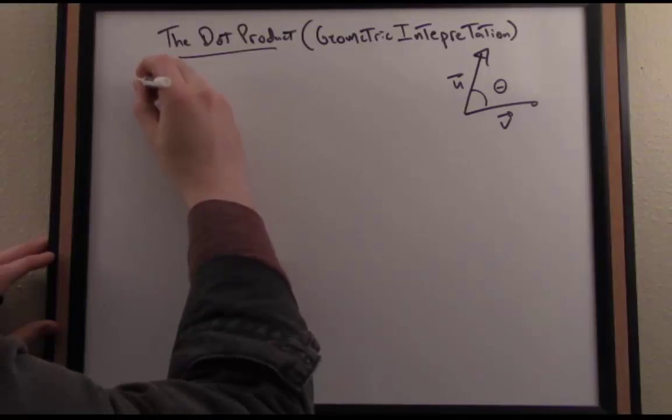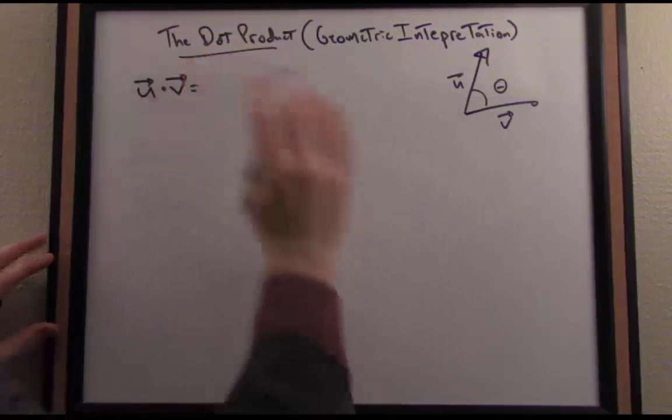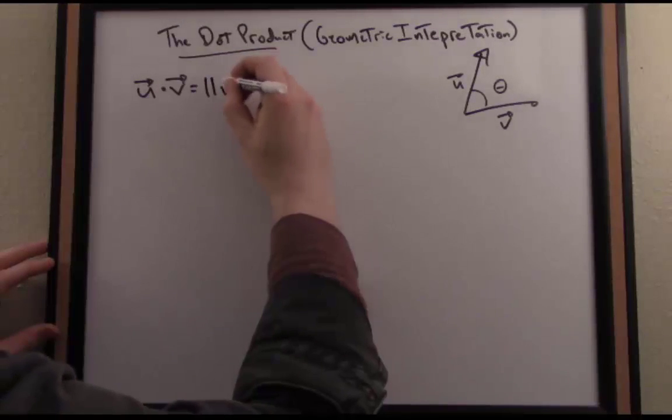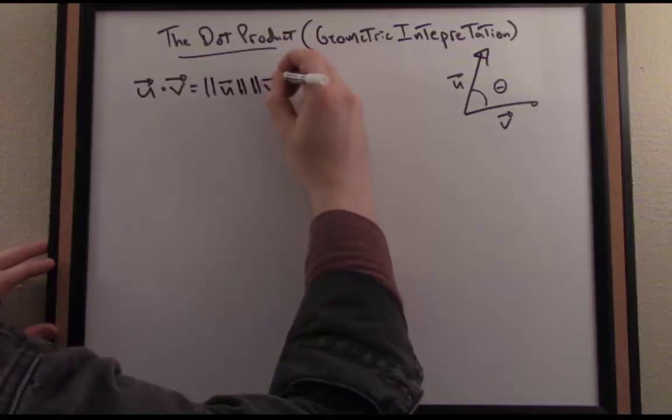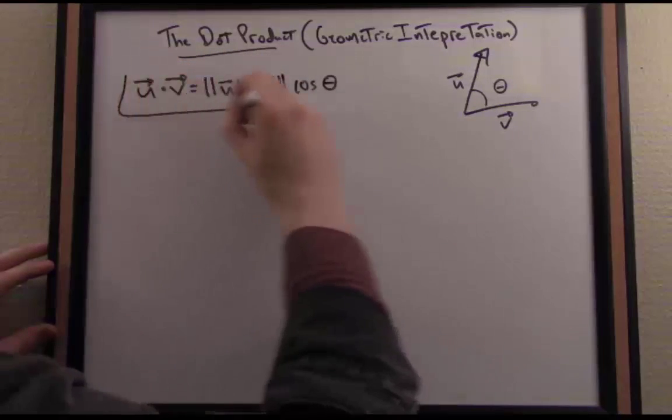So there's a very nice identity that I'm going to write here that relates the dot product of u and v to that angle theta between the two vectors. It goes like this: u dotted with v is the norm of u times the norm of v times cosine of the angle between the two vectors.